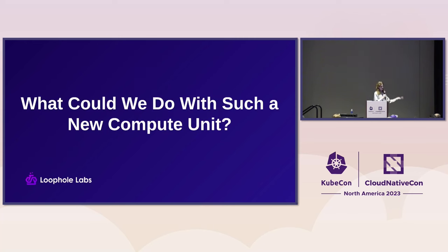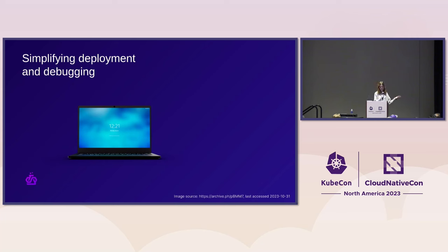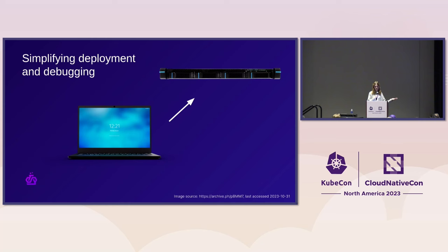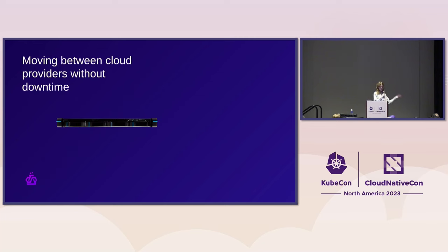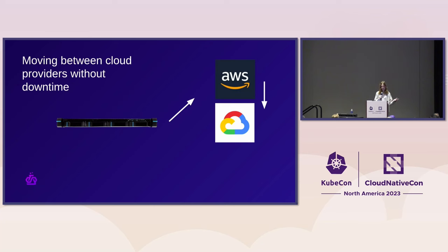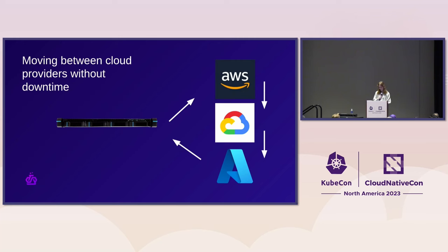Now we're wondering what if this thing existed — what could we do? We could do really cool stuff around deployment and debugging. Deploying an application in a stateful context would simply mean you move the running application to a server. Want to debug it locally? You just move the server back to your local system. You'd also be able to move from on-prem to GCP, and then the next day to AWS, and if GCP is cheaper again, just move back with no downtime.